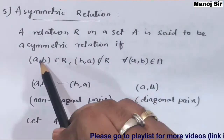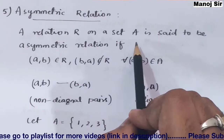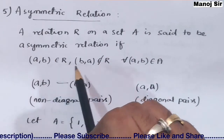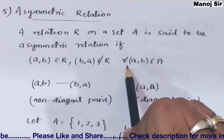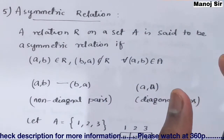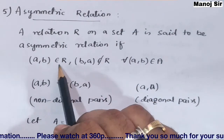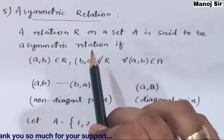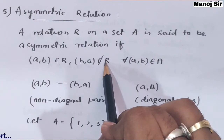A relation R on a set A is said to be asymmetric if: whenever (a, b) belongs to R, then (b, a) does not belong to R, for every (a, b) belonging to A. The definition is very simple.